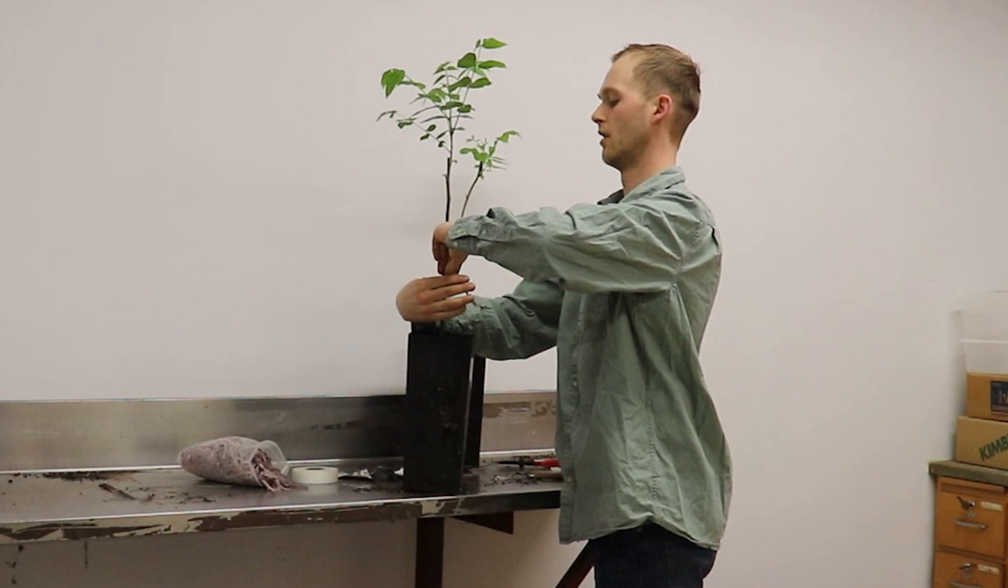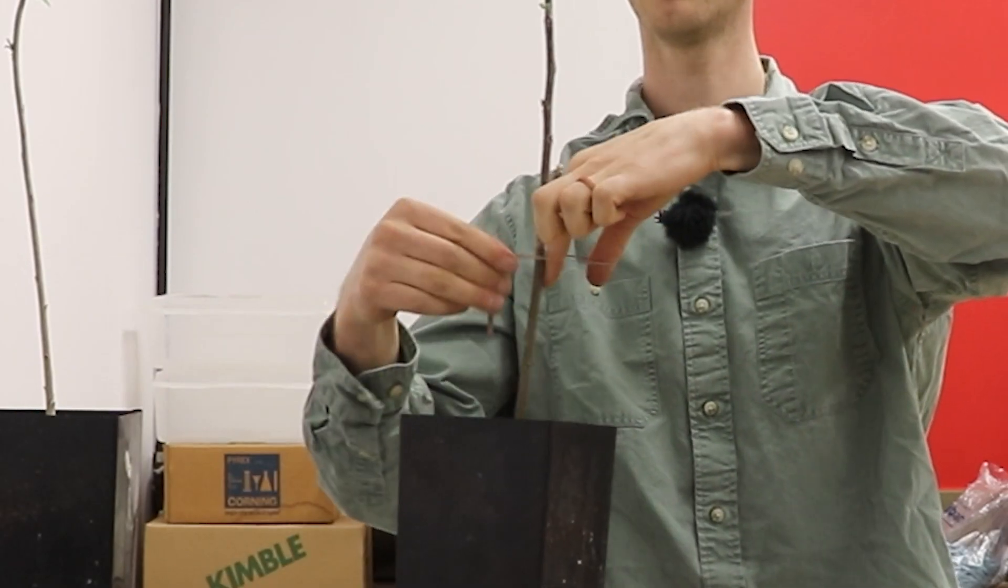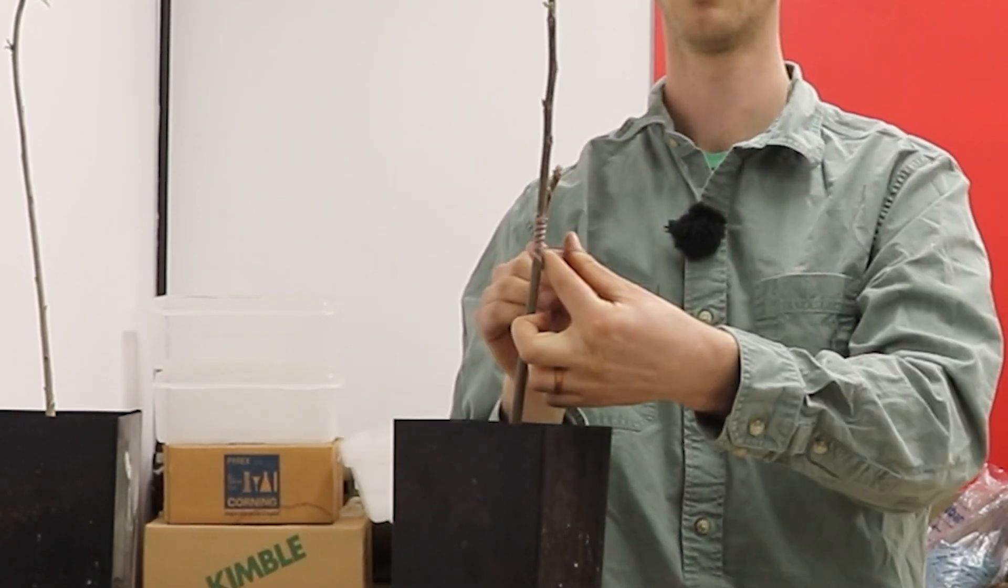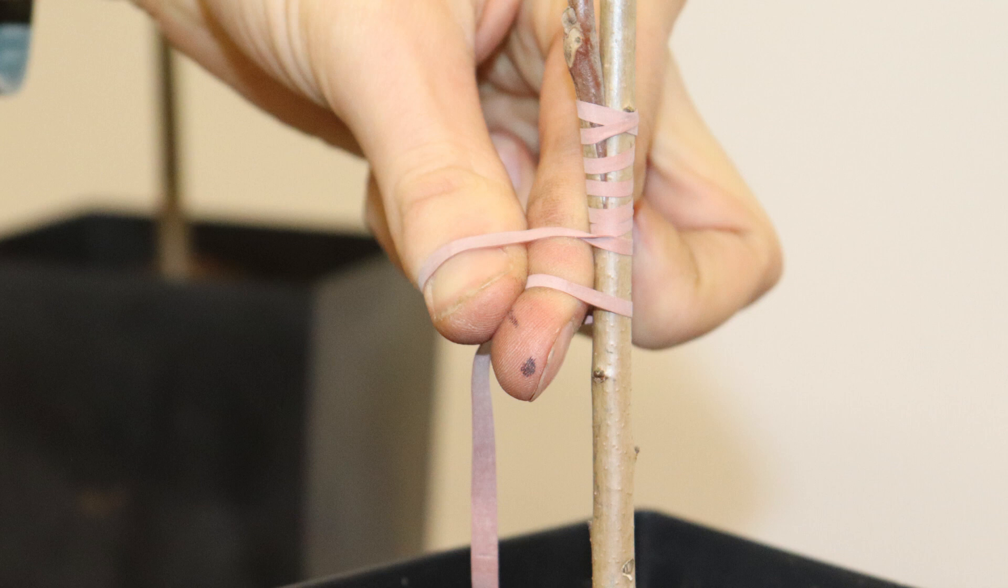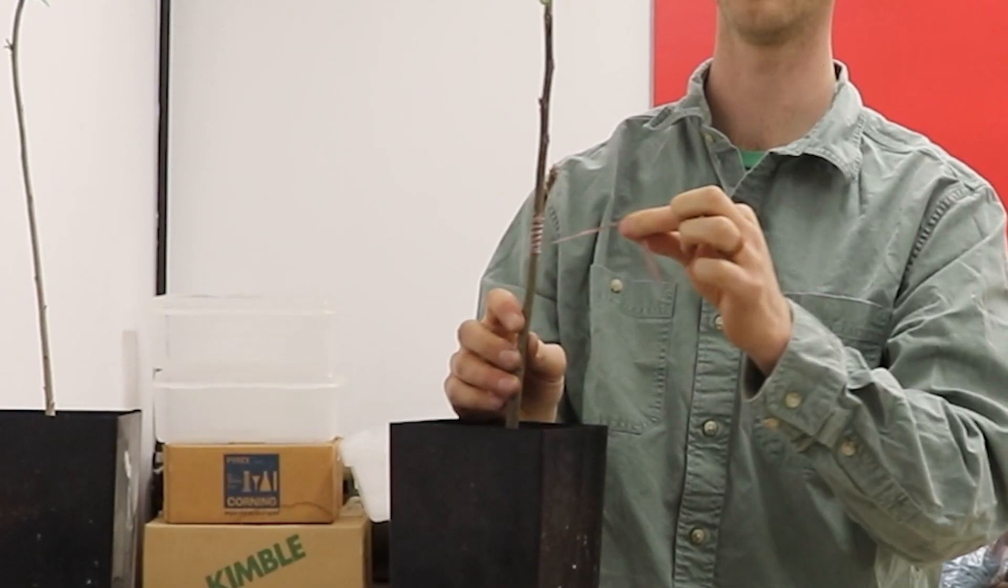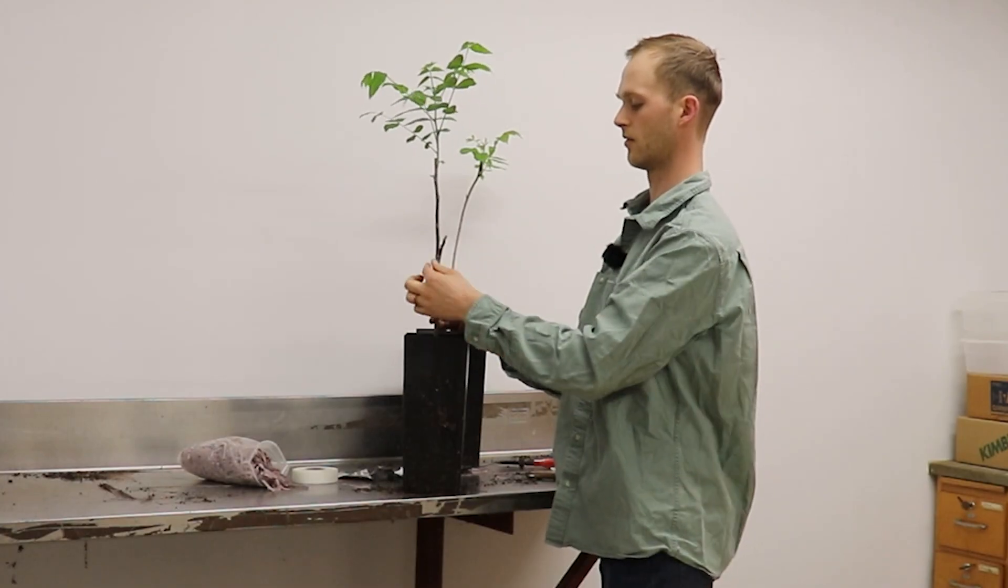So then we tie off, taking two fingers, wrap around the trunk of the rootstock, grab the tail with your two fingers underneath the loop, and pull it tight.